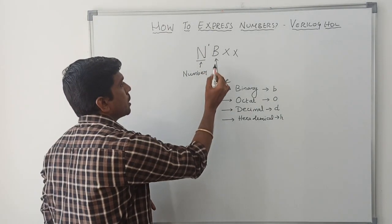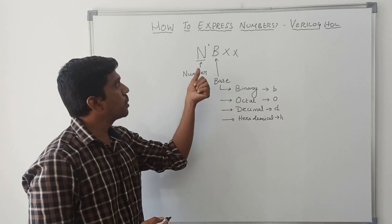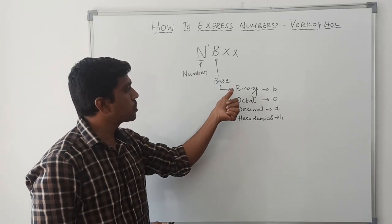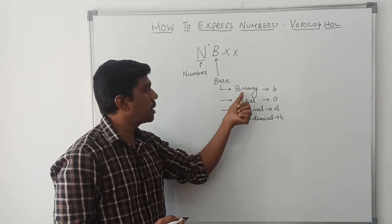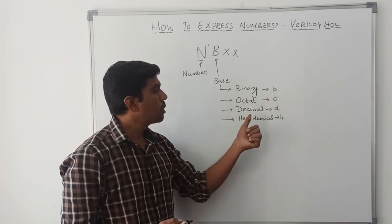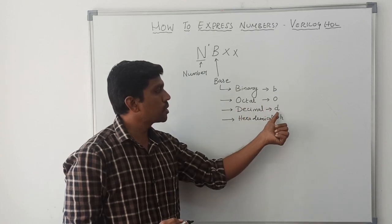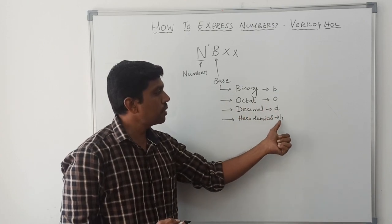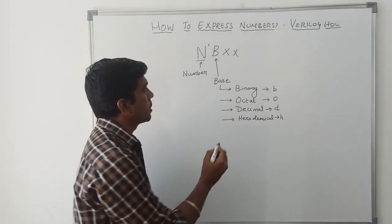This B represents base of number system. In Verilog HDL, we can use these four number systems. Binary number system represents small b. Octal number system represents small o. Decimal represents small d. Hexadecimal represents small h.